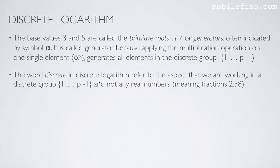The word discrete in discrete logarithm refers to the aspect that we are working in a discrete group 1 till p minus 1, and not any real numbers, meaning fractions 2.58 for example. In this example, the discrete group is values 1, 2, 3, 4, etc., and not 1.5 or 1.8 or 2.5.